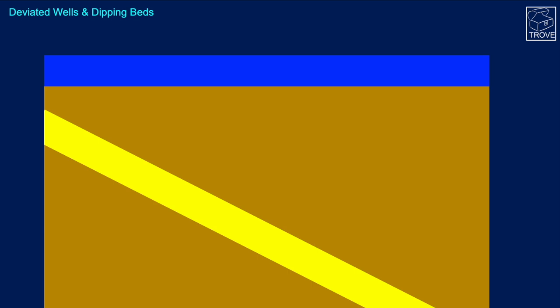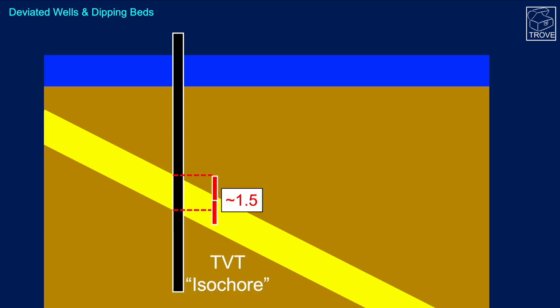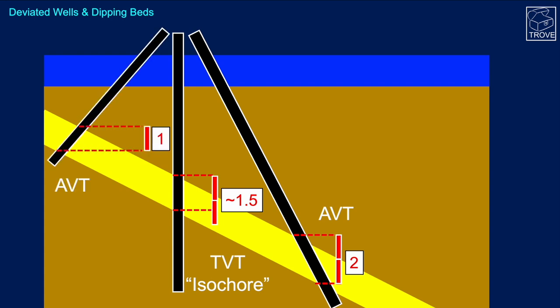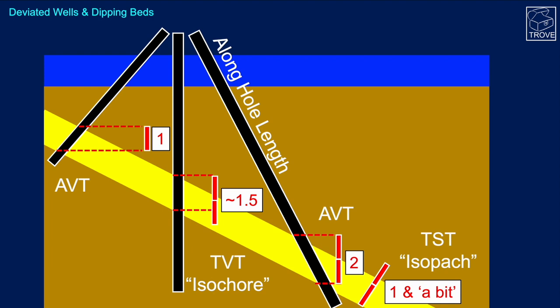Now we want to introduce concepts relating to deviated wells or dipping beds. In a vertical well, the thickness measured is about one and a half units — what we call the true vertical thickness or isochore. We could drill a deviated well down dip, where the same thickness of rock now appears as two units — that's an apparent vertical thickness. Or we could drill it up dip and measure only one unit. The truth is measured perpendicular to the bed: that's the true stratigraphic thickness, or isopac. Depending on how you measure, you can get very different measurements. The actual length encountered in the well is called the along hole length — AHL.